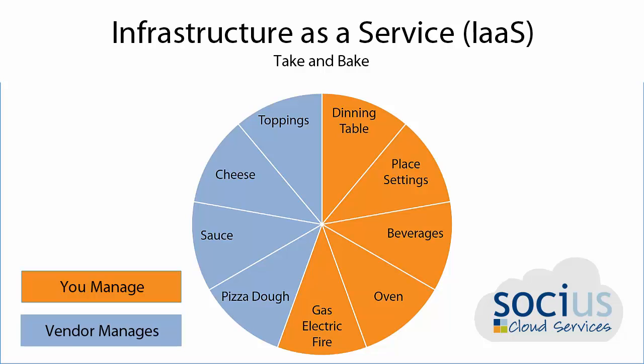With a take-and-bake pizza example — which represents infrastructure as a service — you still have to provide the dining room table, the soda, and you still have to reheat the pizza. But the vendor actually provides the pizza dough, the tomato sauce, the toppings, and the cheese and packaging.